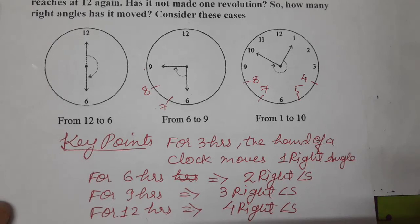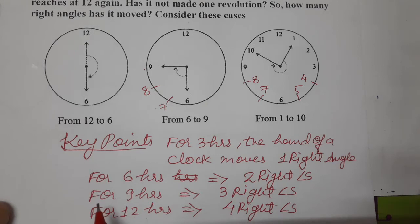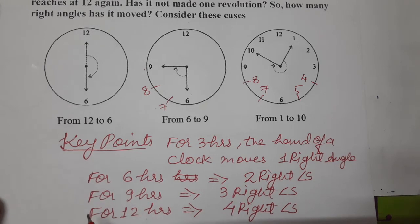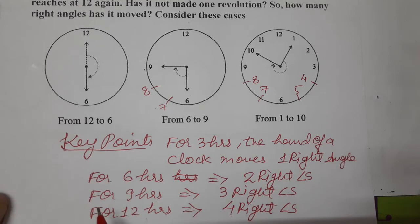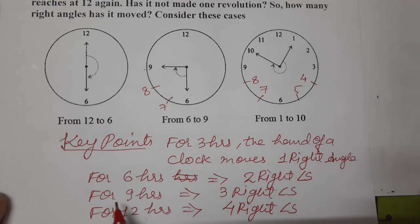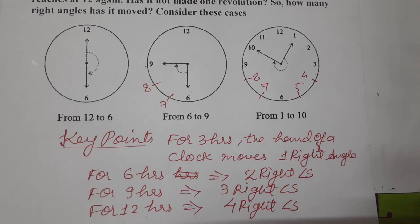This is angles and their revolutions we have studied today. Right angle — three hours — one-fourth of a revolution. Straight angle — six hours — half of a revolution. Then three-fourths of a revolution — nine hours. And the last one is complete angle, meaning twelve hours equals four right angles. I hope you understood the topic. Thank you so much for watching the video.